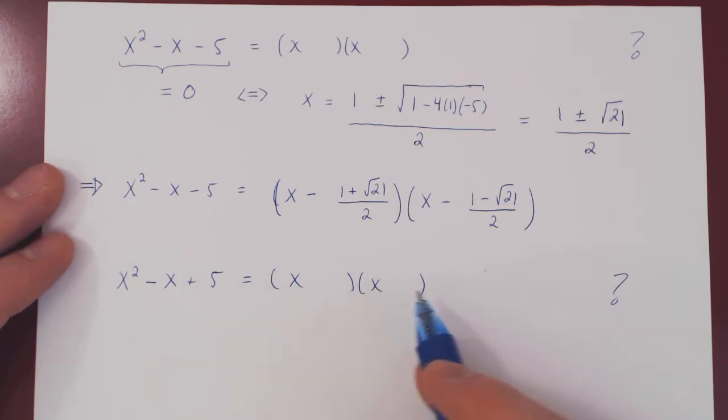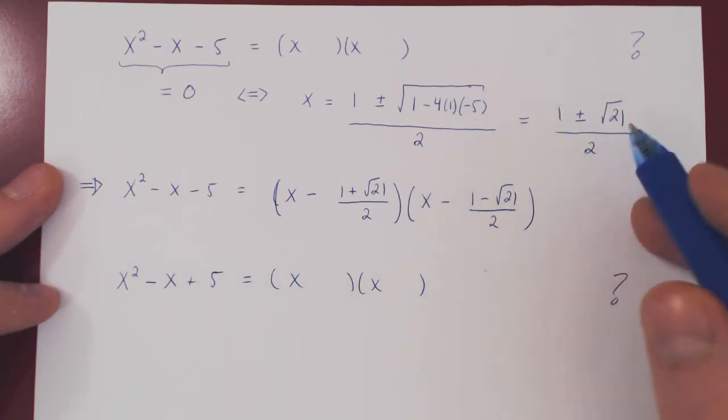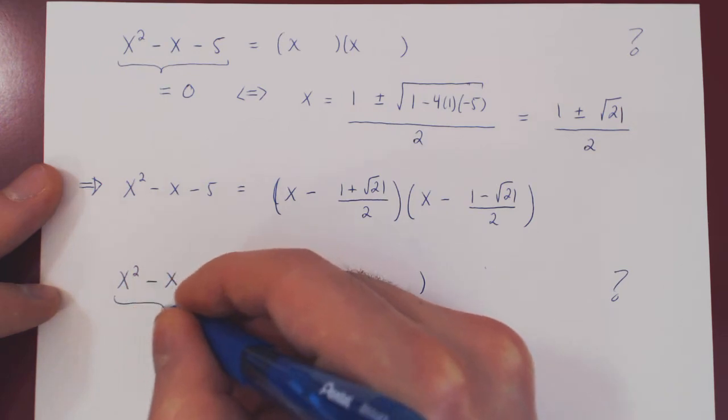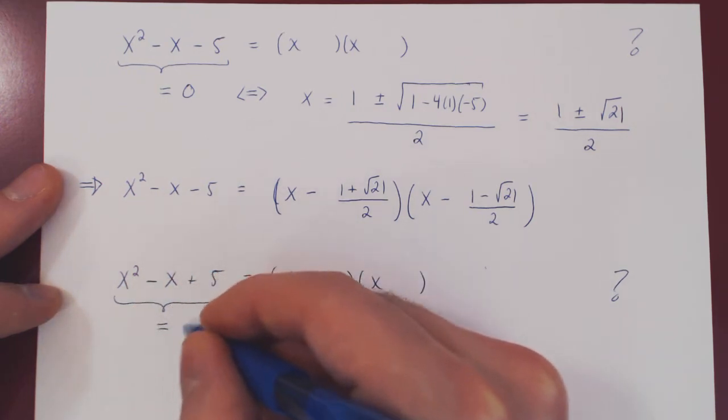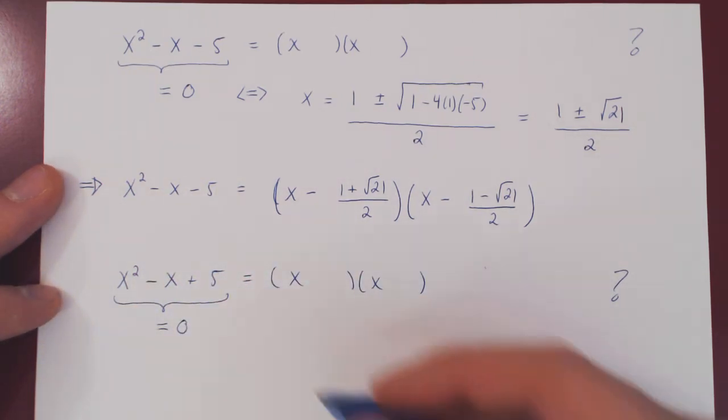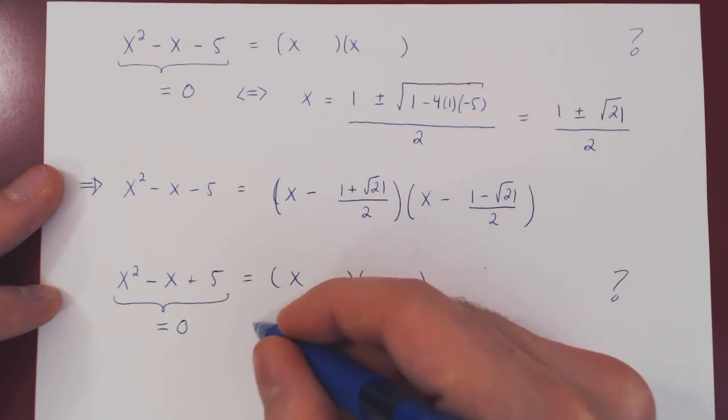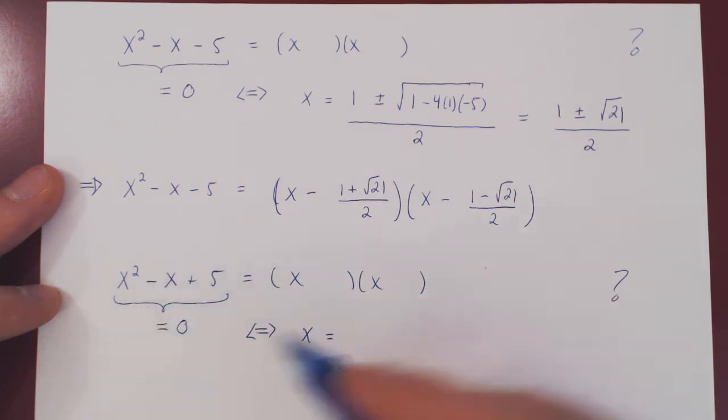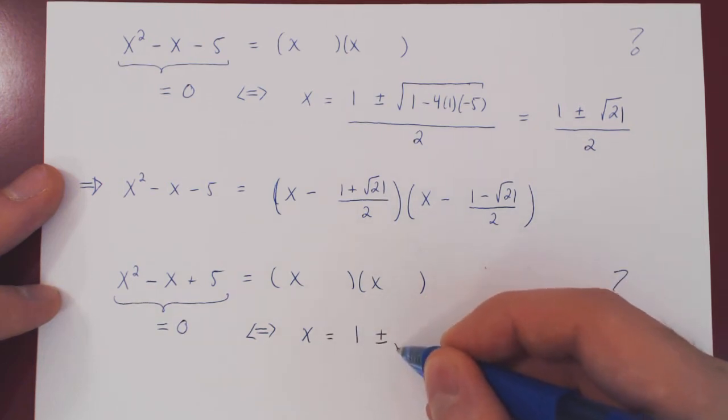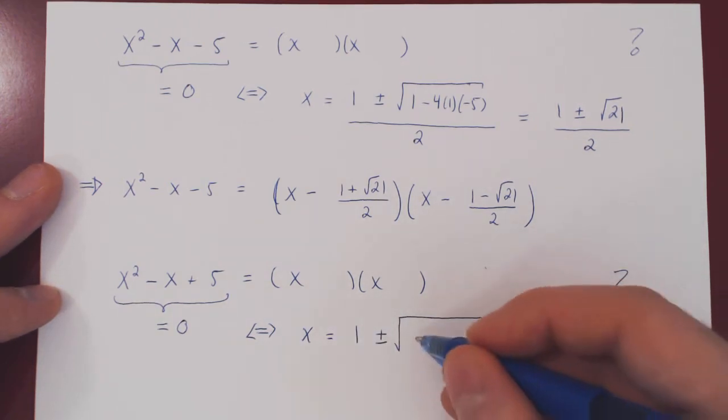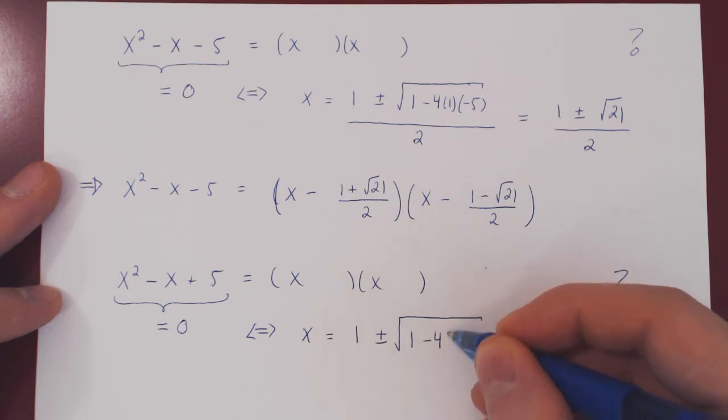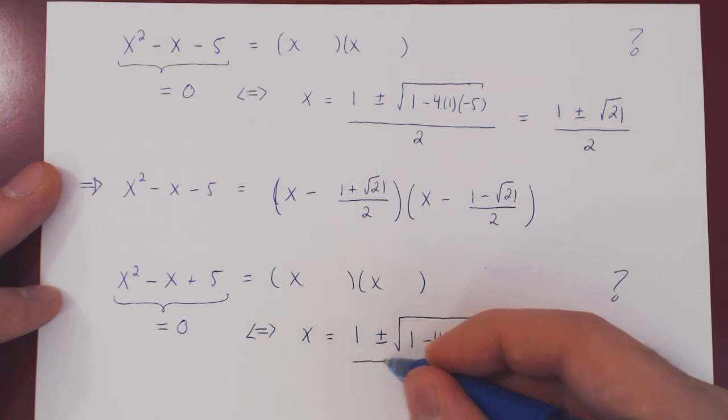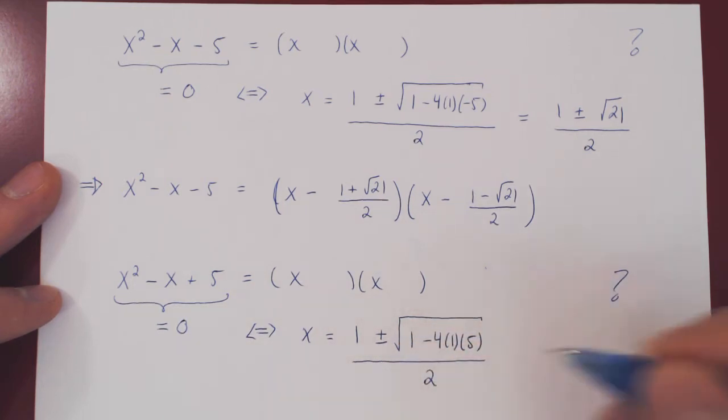To find this factorization, we need the two zeros of the equation. And we can, of course, find those using the quadratic formula. So, this would be zero if and only if x is equal to negative b, negative negative 1, positive 1, plus or minus the root of b squared, which is 1, minus 4 times a, which is 1, times c, which is positive 5, over 2a, 2 times 1 is 2.